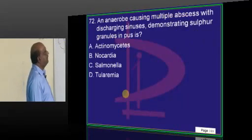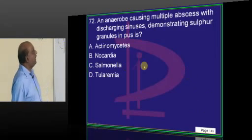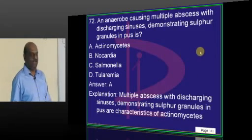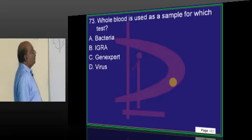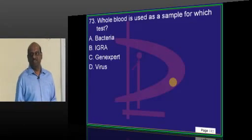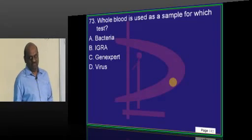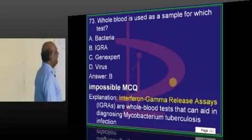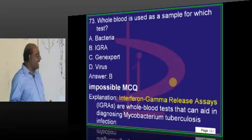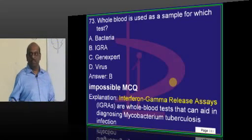An anaerobe with multiple abscesses — can it demonstrate sulfur granules? Sulfur granules and Actinomyces — everyone knows. Whole blood is used as a sample for which test? This is an uncrackable question. The answer is interferon gamma release assays (IGRA). You have to use whole blood, which is typically used for diagnosing Mycobacterium tuberculosis.